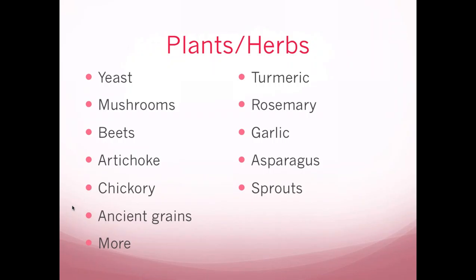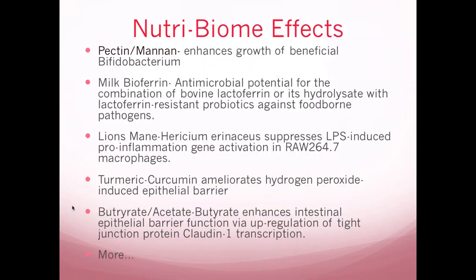We also have an opportunity to look at turmeric, rosemary, garlic, asparagus, and sprouts — all things that contribute to a healthy microbiome. Unless you know your patient has pushed their microbiome too far with any given one — for example, grains, yeast, or garlic. Some people can't handle garlic until they've fixed their gut. But these all give you tools.